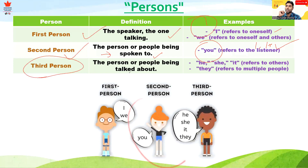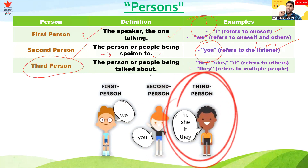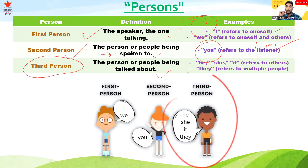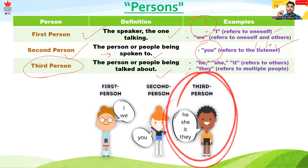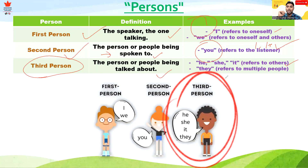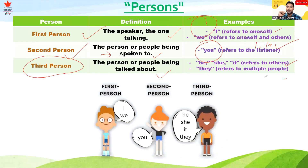The third person is the person or people being talked about. The third person refers to others. The second person is the listener, and the third person is someone else.